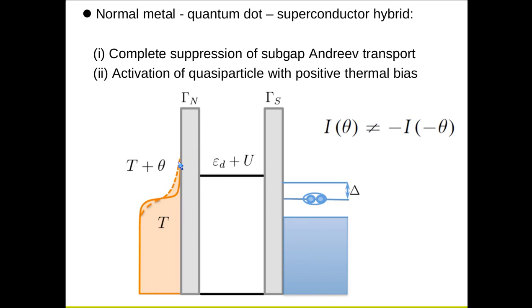But this is not the case when we cool the system down, where the Fermi function sharpens so that the tunneling is blocked because of the superconducting gap.